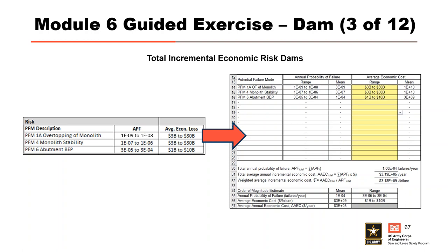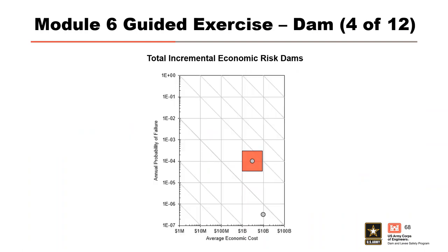Here is the risk matrix showing the geometric mean of the potential failure modes and the order of magnitude total incremental risk. Note that PFM 1A is below the 1×10⁻⁷ line and so is not shown on the chart. Next, we complete the Total Incremental Economic Risk for Dams worksheet. The worksheet is linked to the life safety worksheet, so failure mode descriptions and APF are automatically populated. Using the dropdown menus, enter the corresponding average economic cost range. The worksheet calculates geometric means, sums PFMs to determine APF total and AAEC total, and calculates the weighted average incremental economic cost (dollar-sign bar). A matrix is generated showing PFM geometric means and order of magnitude total incremental economic risk; PFM 1A is again below the 1×10⁻⁷ line.